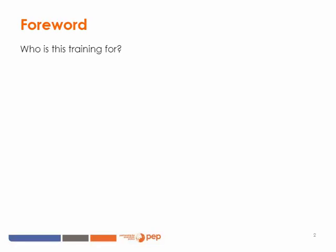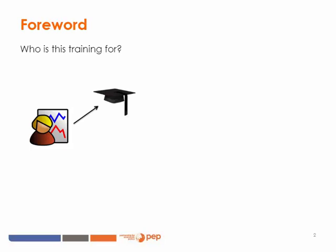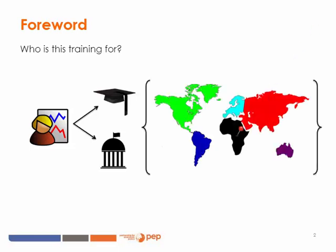First, who is this training for? This training is addressed to economists who have completed at least a first degree in Economics, or preferably a second degree. It is addressed to economists working in university or students, and also to economists working in the private or in the public sector, such as economists in the Department of Finance of their own country. Finally, it is addressed to economists worldwide, for economists working in developed as well as in developing countries.